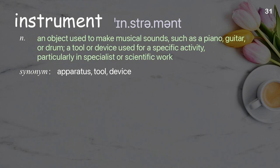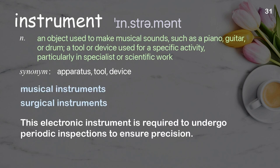Instrument: an object used to make musical sounds, such as a piano, guitar, or drum; a tool or device used for a specific activity, particularly in specialist or scientific work. Examples: musical instruments, surgical instruments. This electronic instrument is required to undergo periodic inspections to ensure precision.